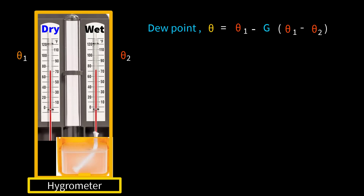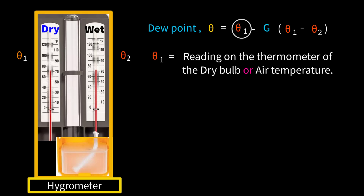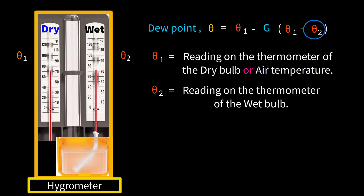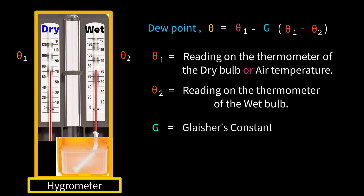According to Glacier's law, the dew point θ equals θ₁ minus G times (θ₁ minus θ₂). Here, θ₁ equals the reading on the dry bulb thermometer (air temperature) — note that air temperature and the dry bulb reading are the same. θ₂ equals the reading on the wet bulb thermometer. G equals Glacier's constant, and there are different Glacier's constants for different temperatures.